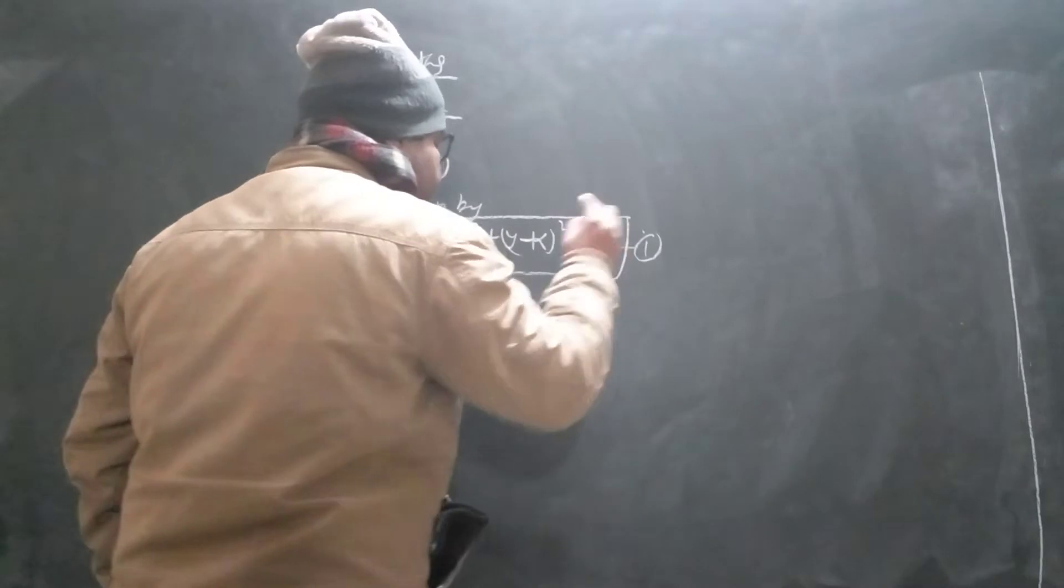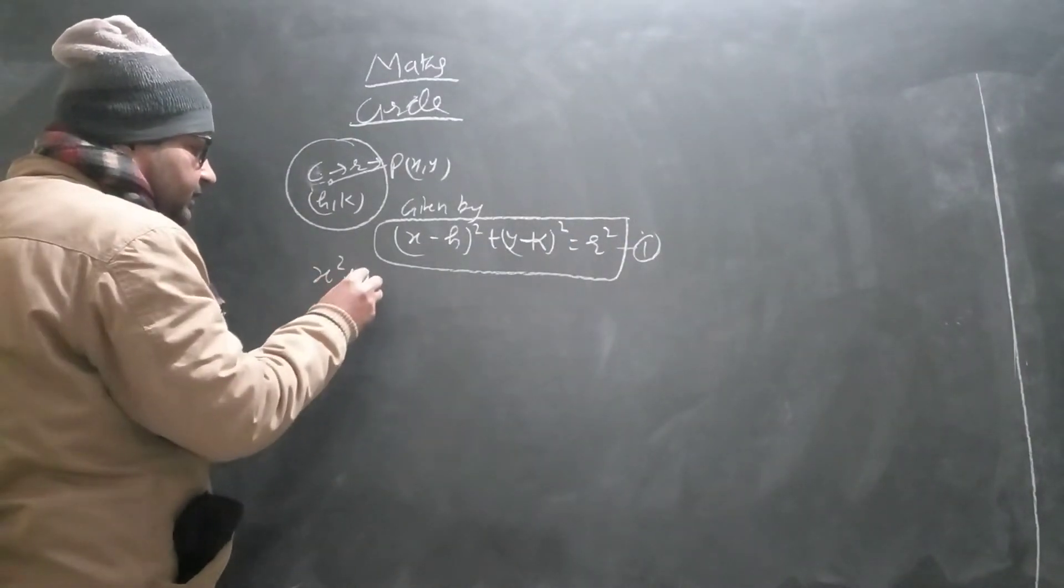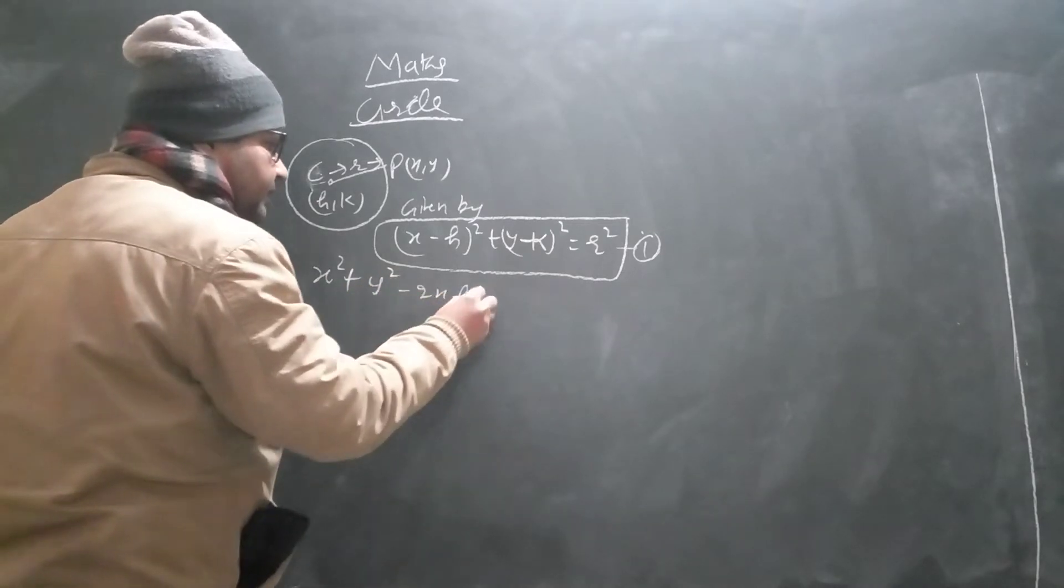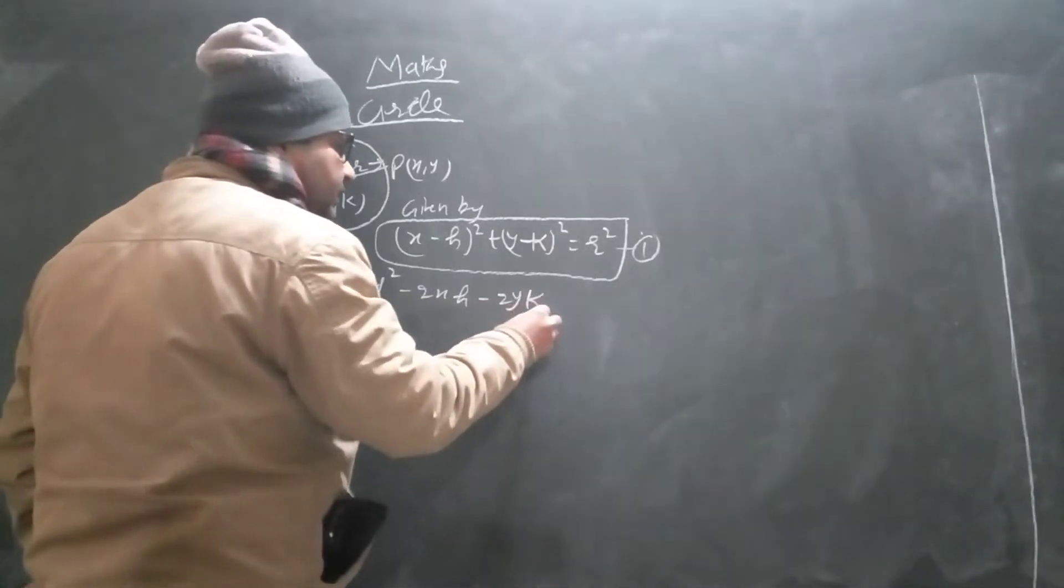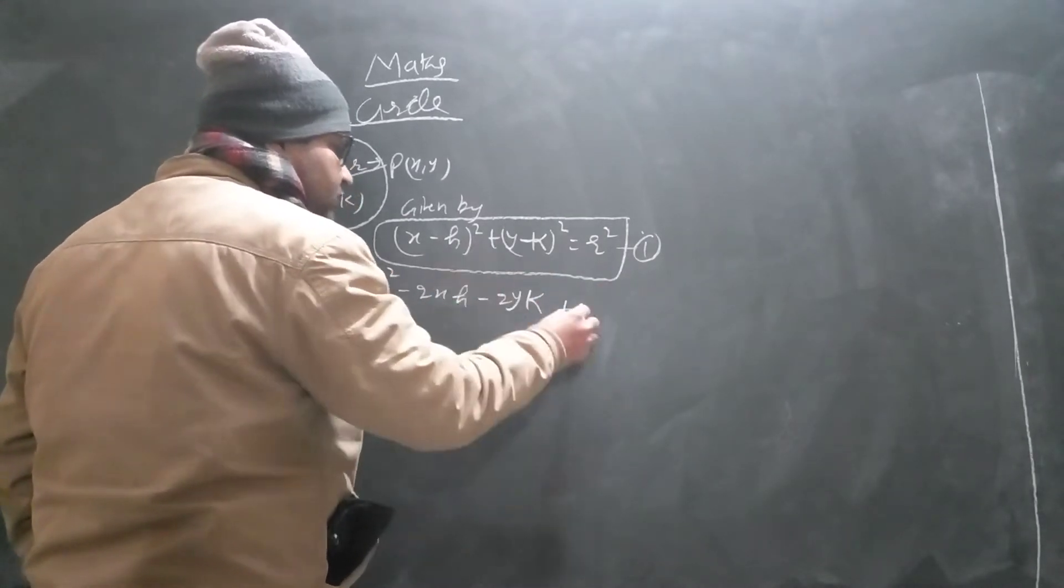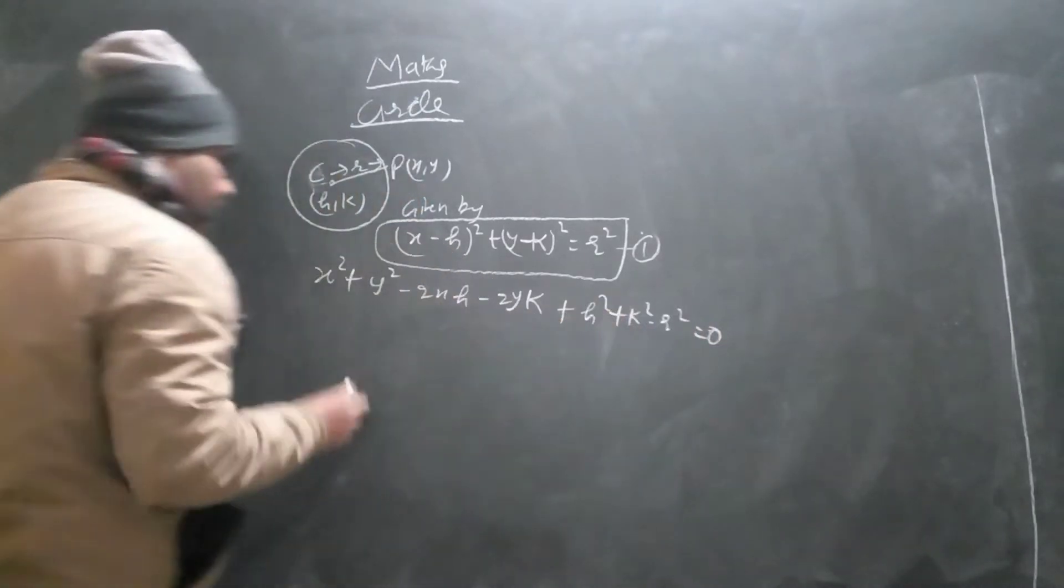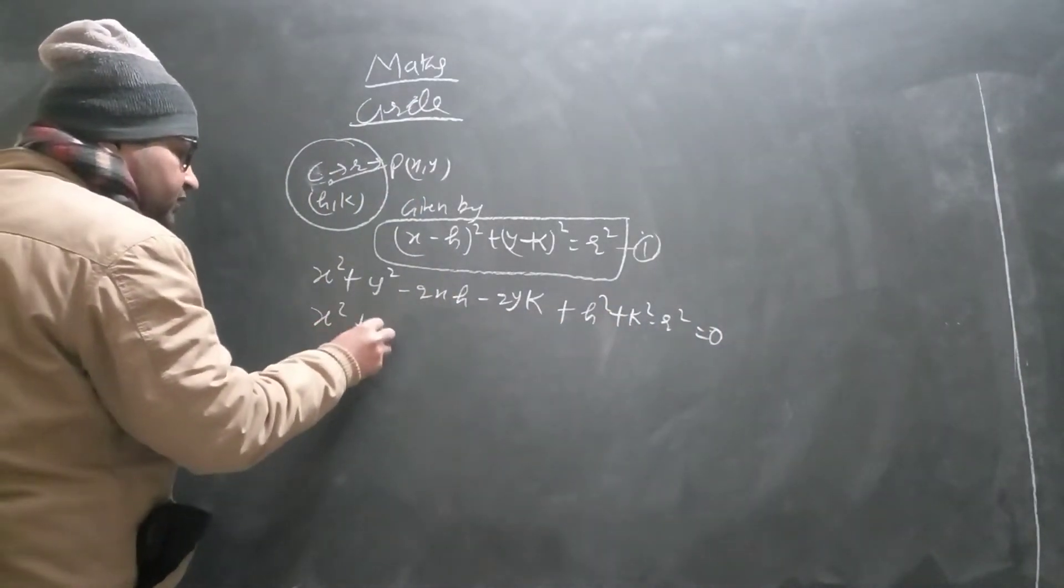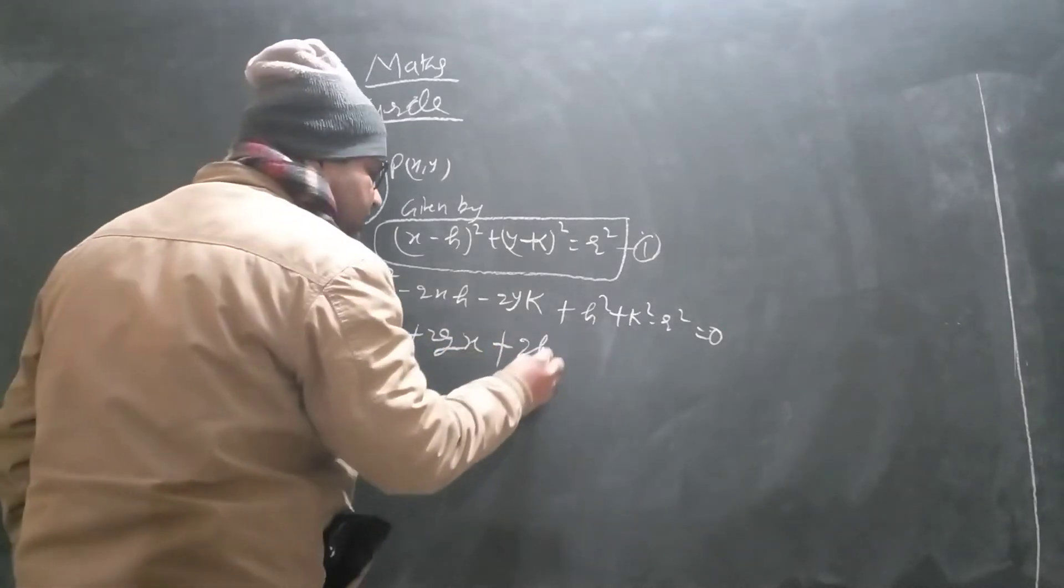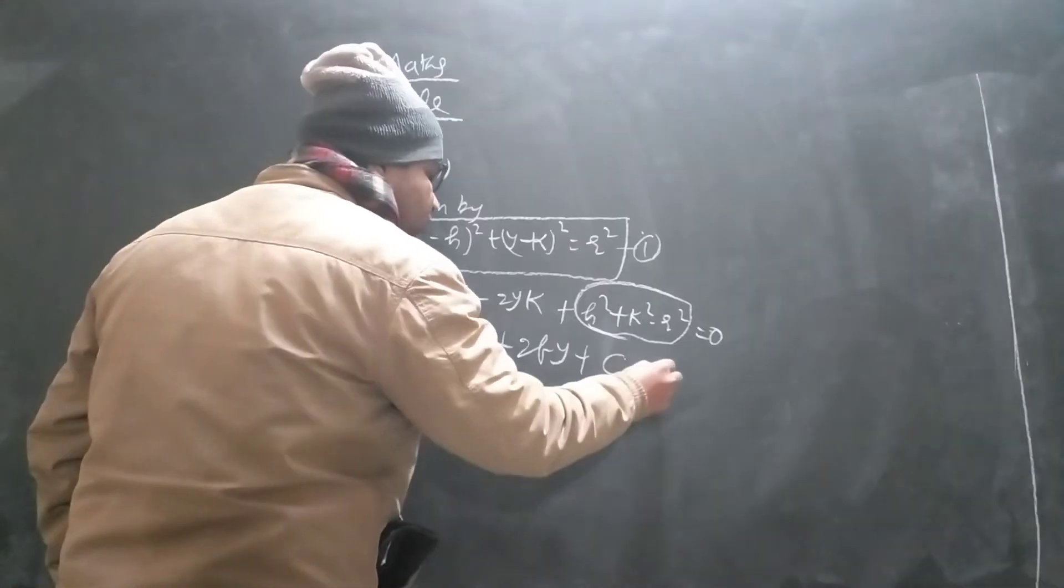This is one form. Now, when we expand, look at this, then we will have 2XH, 2YK, taking R square towards the left side also, plus H square plus K square minus R square, which is also said to be in this form: 2GX, 2FY, and this complete simplification is said to be C.